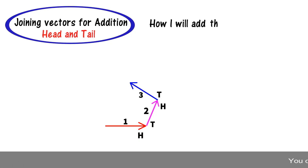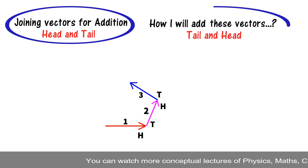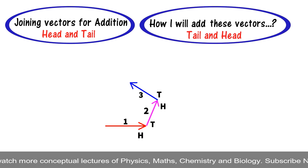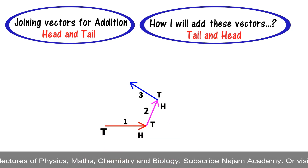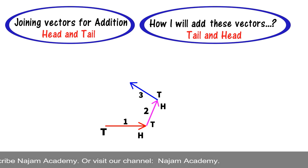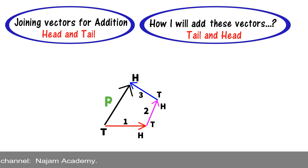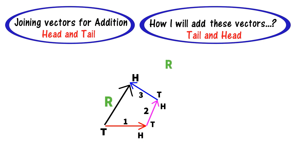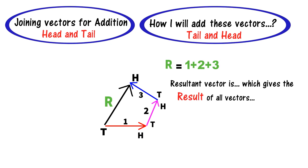To add all of these vectors, I use the tail and head trick: I join the tail of the first vector with the head of the third vector, and this gives me the resultant vector. This resultant vector gives the addition of the three vectors — 1 plus 2 plus 3. Remember, the resultant vector is the vector which gives the combined result of all three vectors.